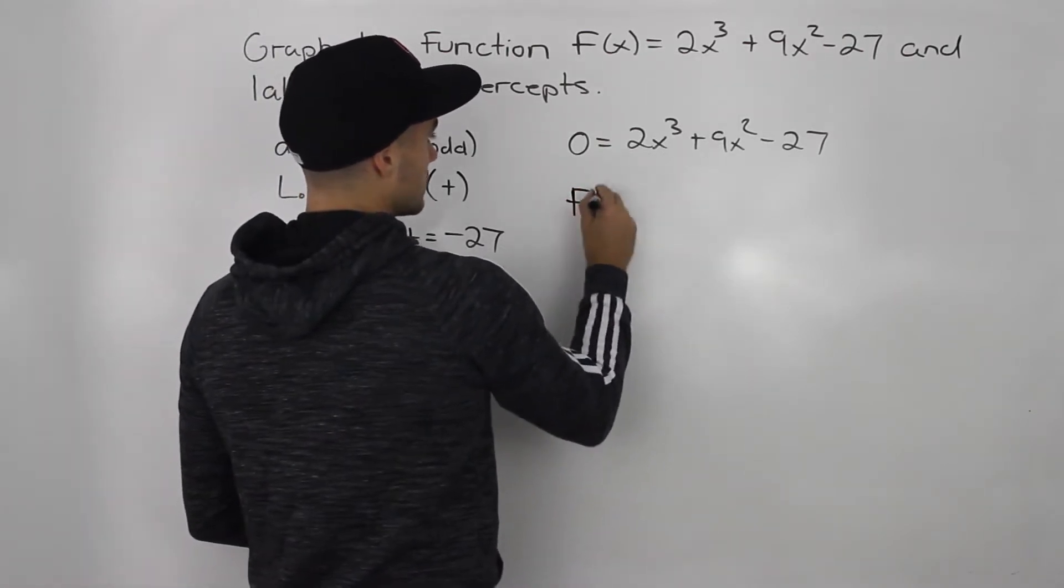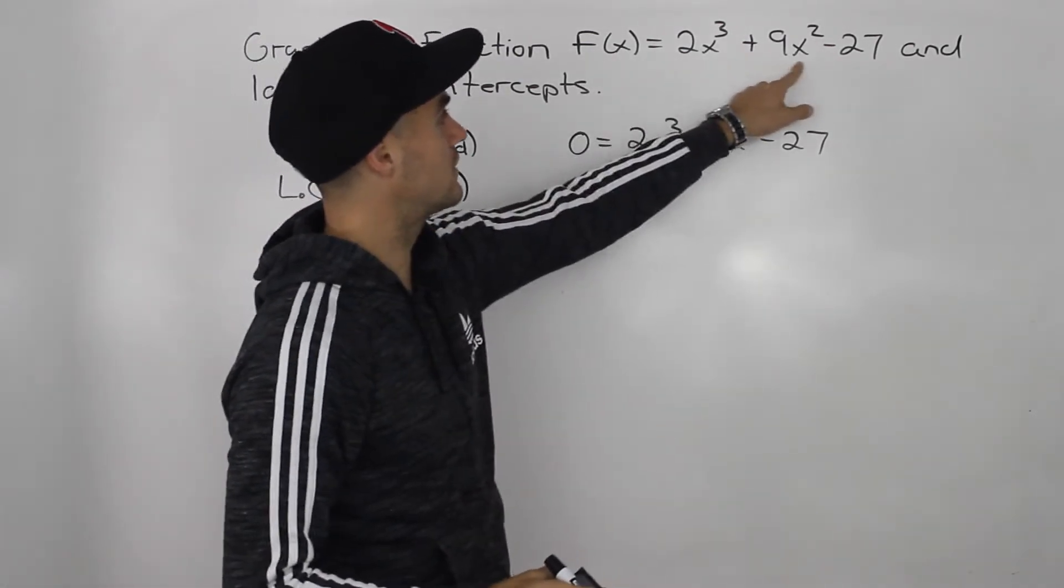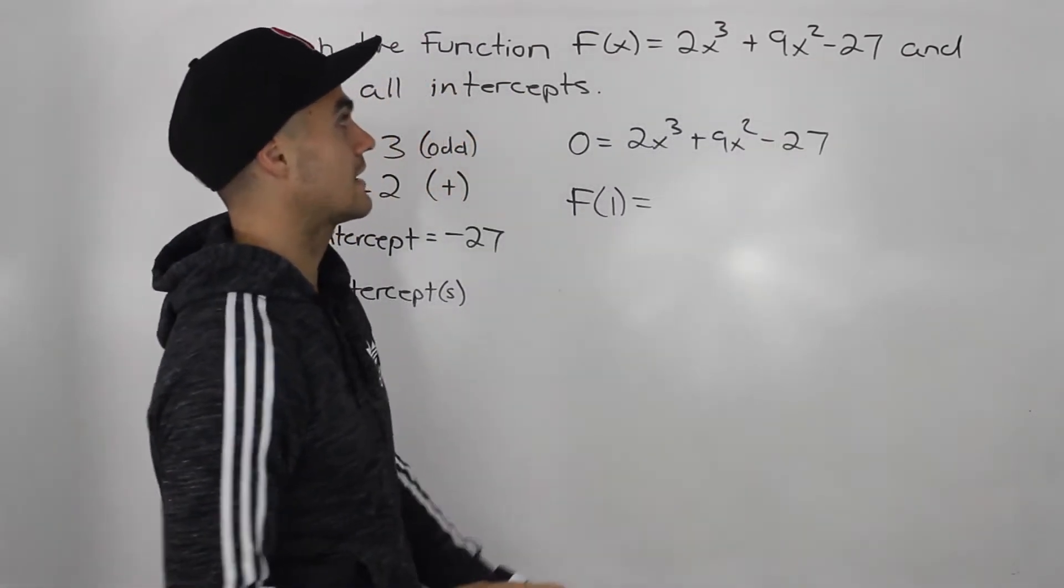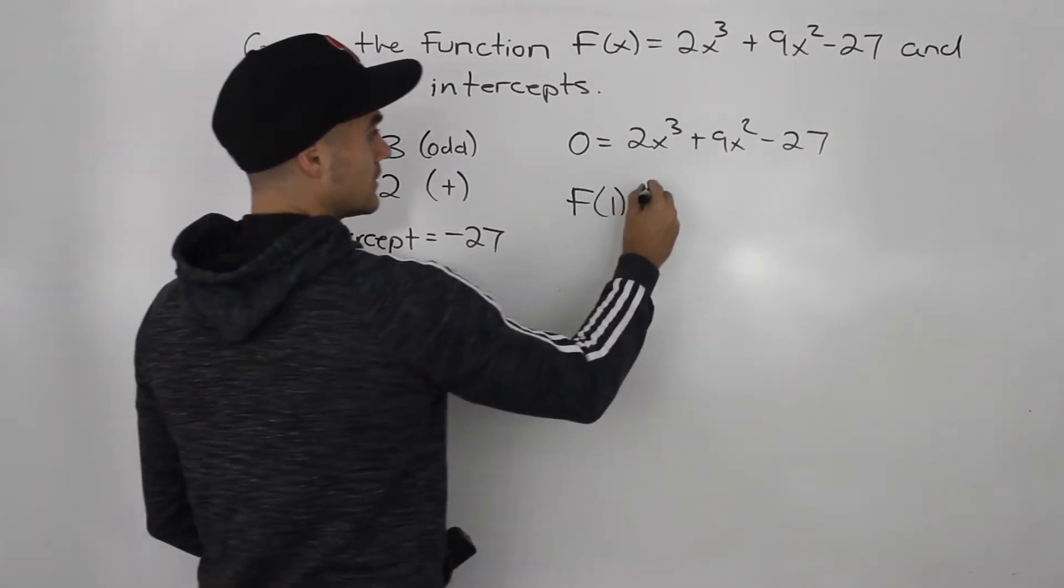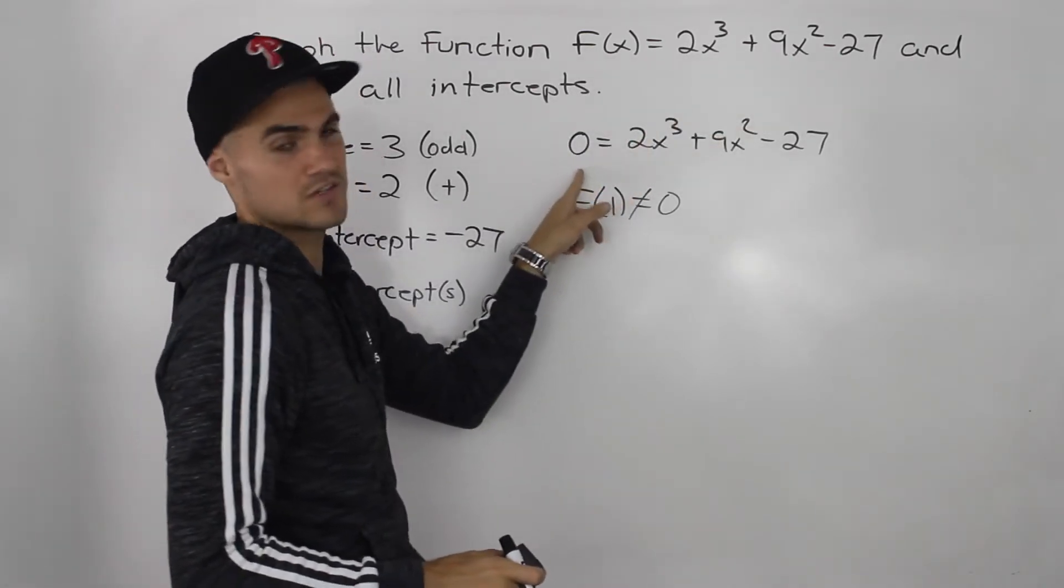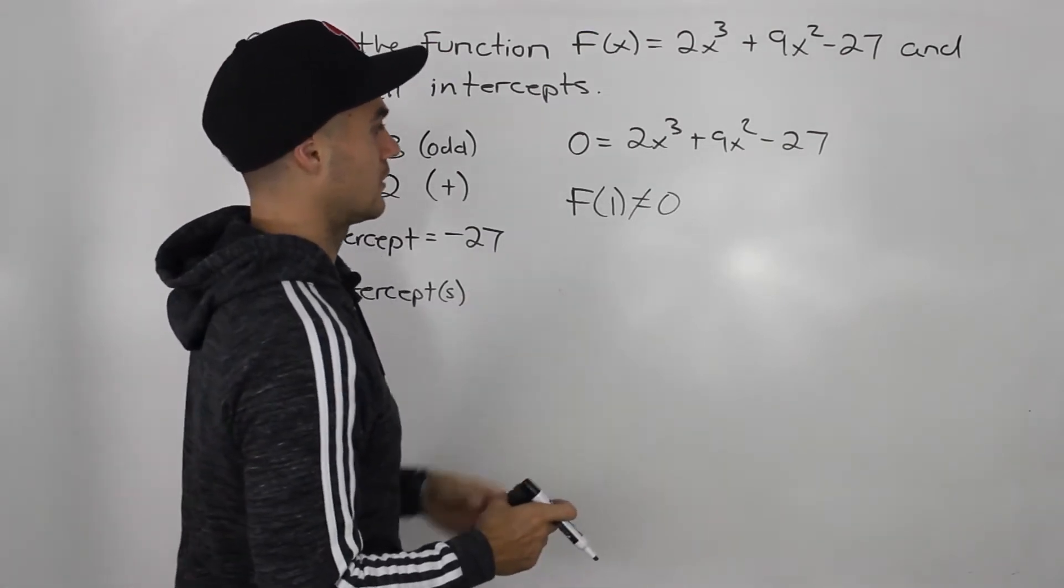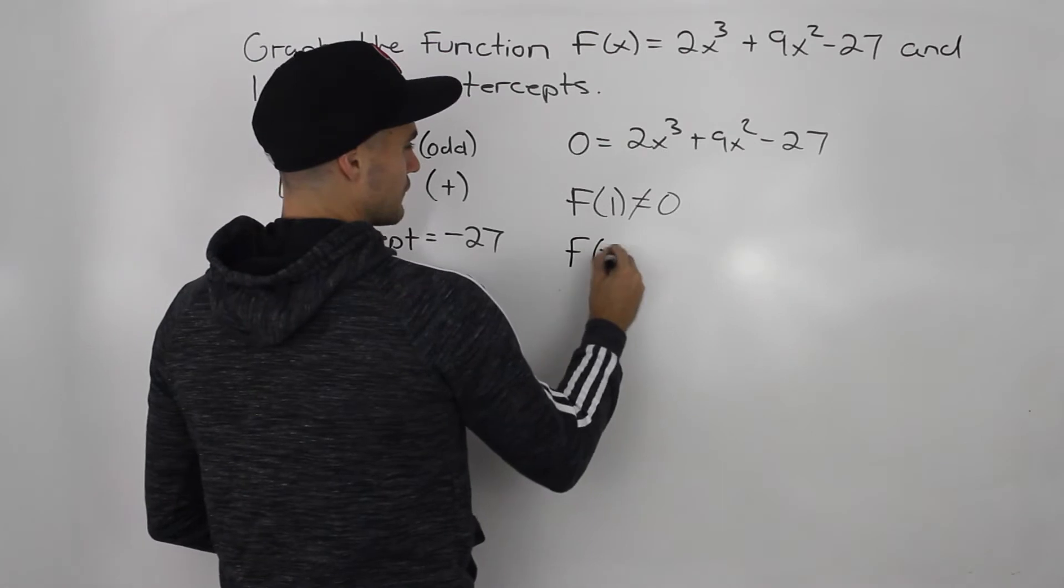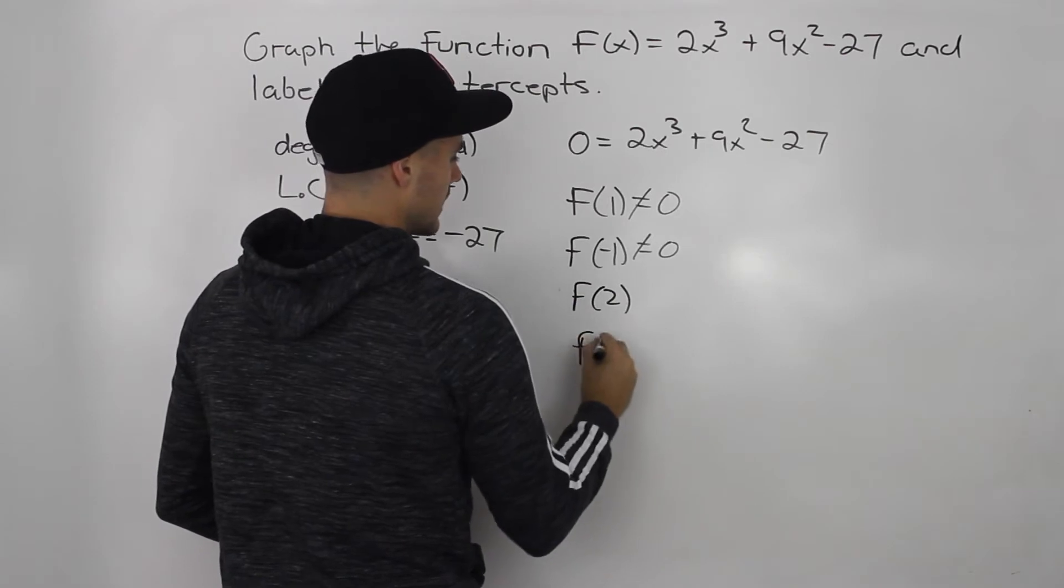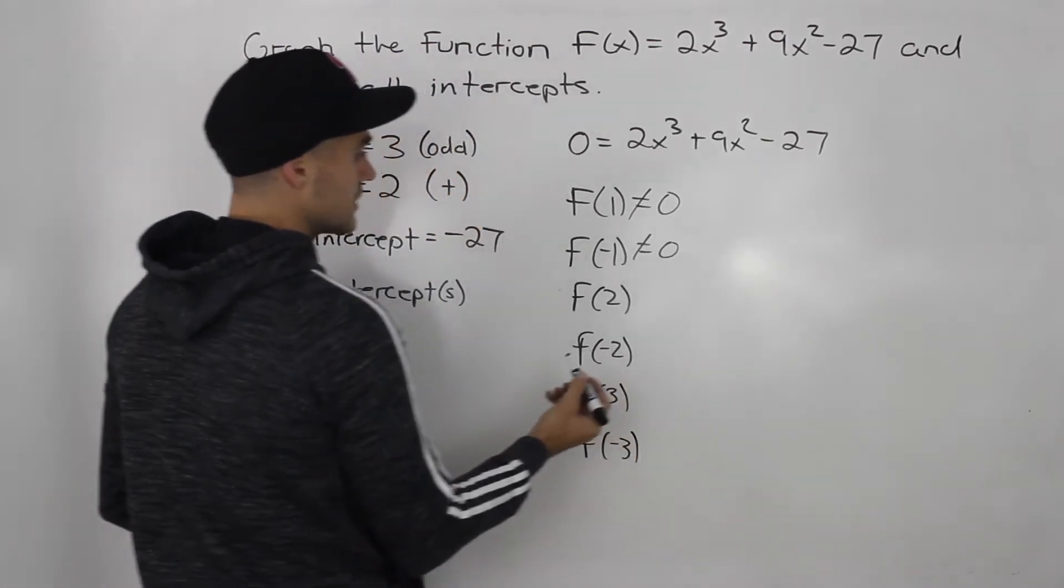So what we do is we start plugging in values. If we plug in f of 1, we'd have 2 + 9, which is 11, minus 27, which would give us negative 16. So f of 1 doesn't equal 0. We're basically looking for a number where if we plug it in for the x's, it's going to equal 0. We could try negative 1, we could try 2, negative 2, perhaps 3, negative 3. Sometimes you got to go pretty far until you get a 0.